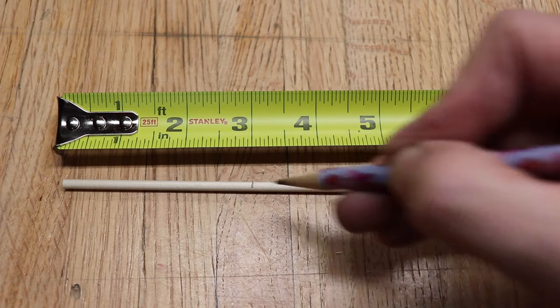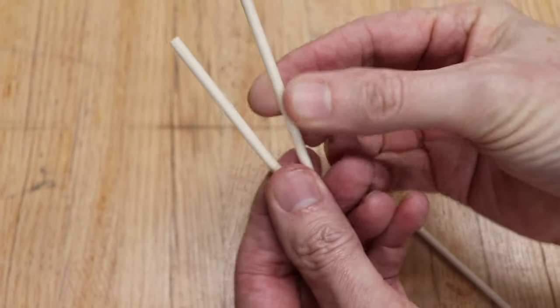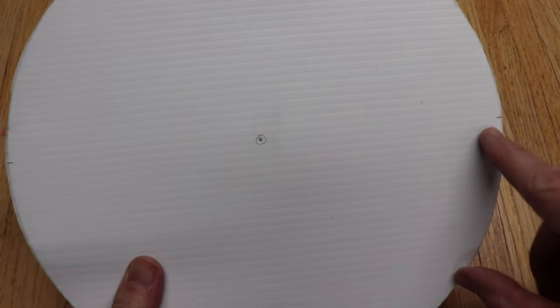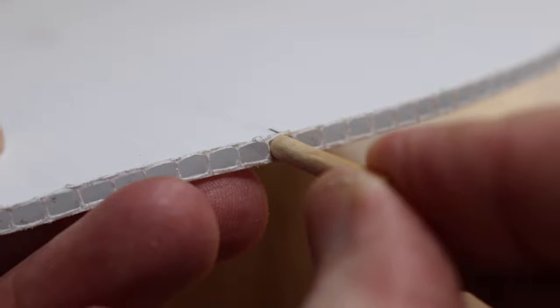Take your dowel and make a mark at the three inch and the six inch mark and then cut it. And now make a couple of marks where that main tube lines up with the center. Then push your two lengths of dowel in until there's about three quarters of an inch sticking out.